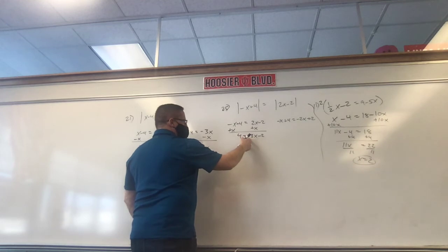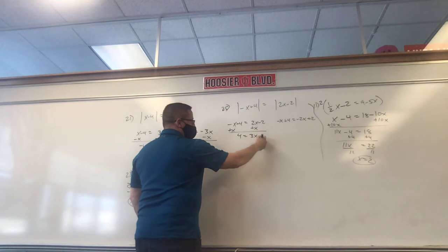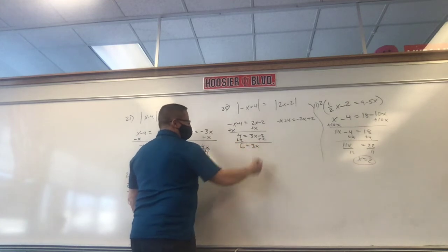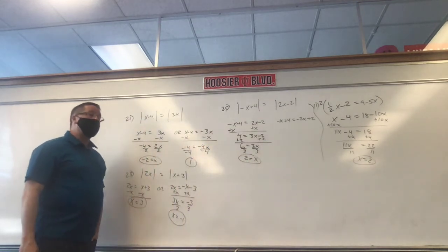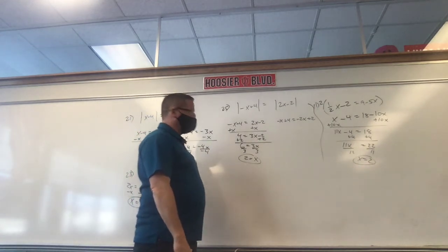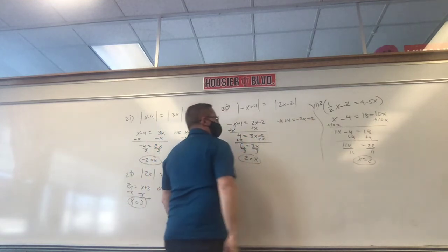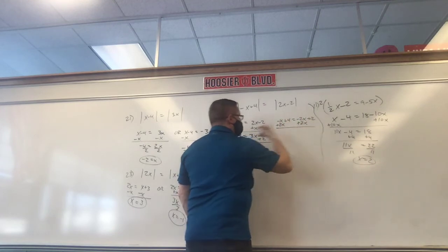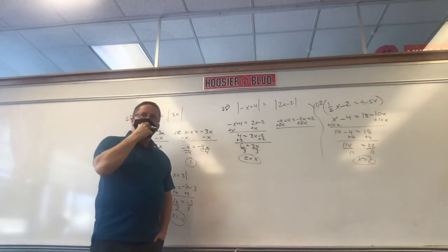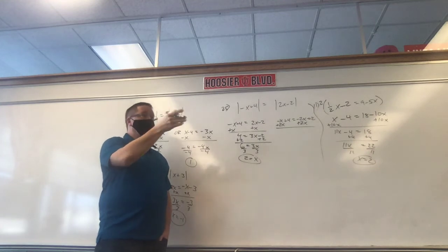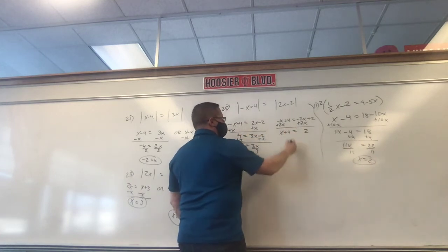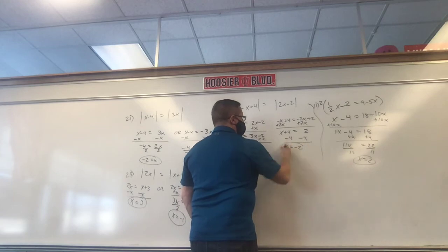First equation: add x to each side, 4 equals 3x minus 2, plus 2 to each side, 6 equals 3x, x equals 2. Second equation: get rid of negative 2x — it's smaller. Add 2x: x plus 4 equals 2. Minus 4: x equals 2 minus 4, which is negative 2. So the answers are negative 2 and positive 2.